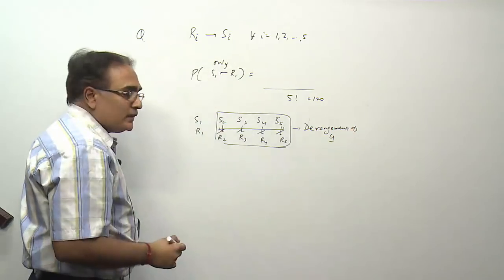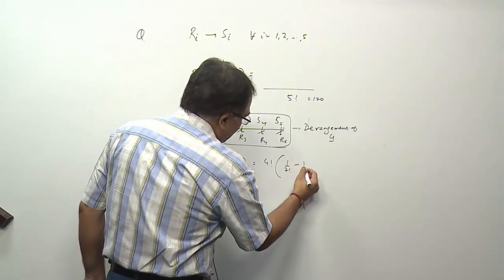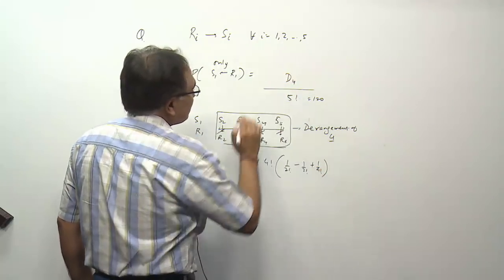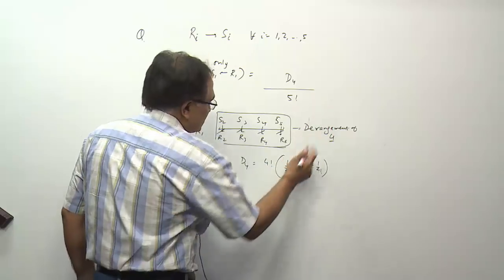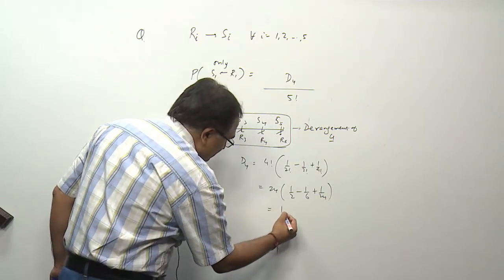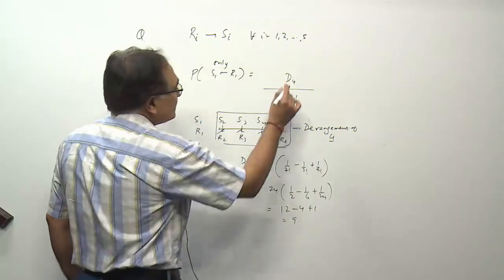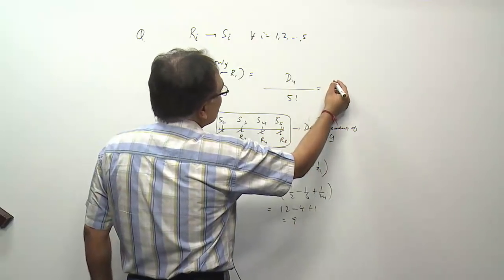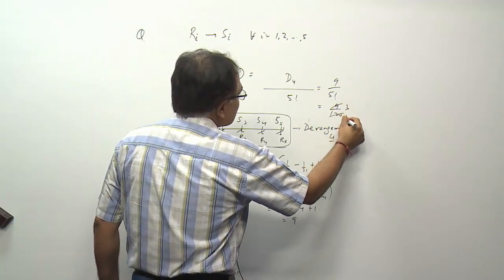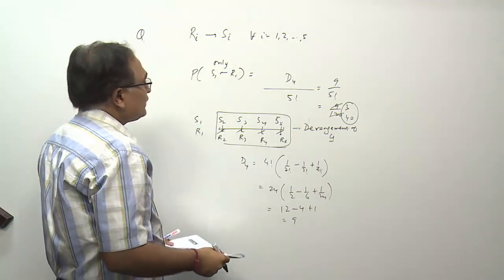Derangement of 4, denoted D4, equals 4 factorial times (1/2! − 1/3! + 1/4!). That is 24 times (1/2 − 1/6 + 1/24), giving 12 − 4 + 1 = 9. So D4 = 9 is the number of favorable cases. The required probability is 9 by 5 factorial, that is 9 by 120, which simplifies to 3 by 40. The answer key for the first question is 3 by 40, option E.